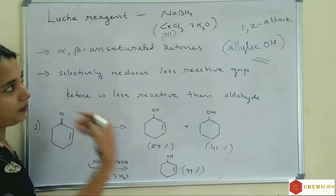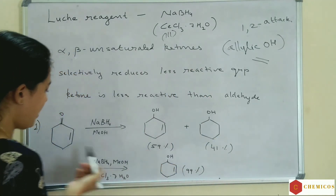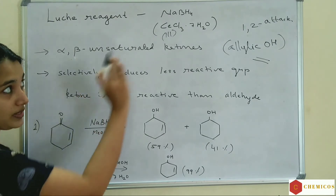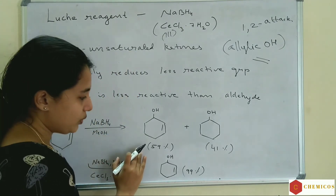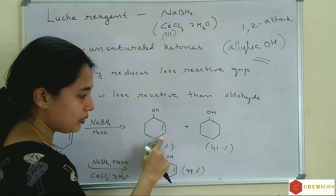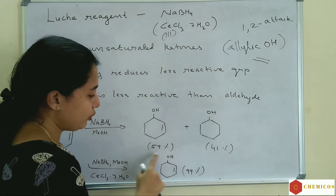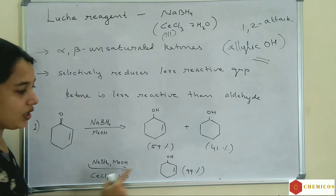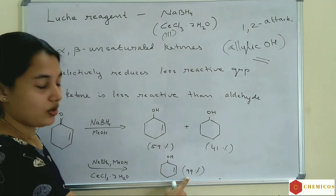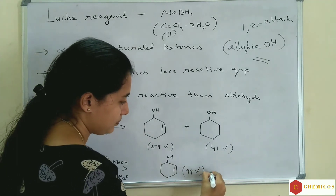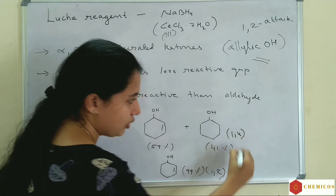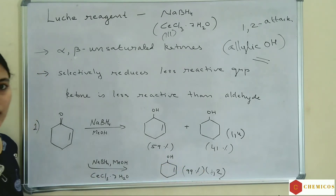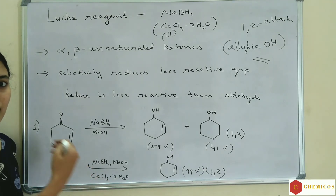For example, when NaBH₄ without CeCl₃ is used, it gives two products — allylic and non-allylic — with 59% allylic and 41% non-allylic. But when CeCl₃ is present (Luche reagent), 99% of the product is the allylic 1,2-addition product. Only 1,2-addition is formed; 1,4-addition is essentially eliminated when Luche reagent is used.